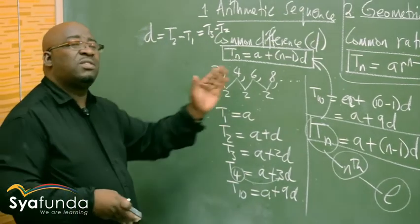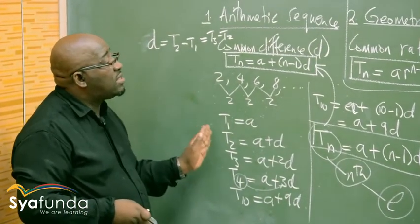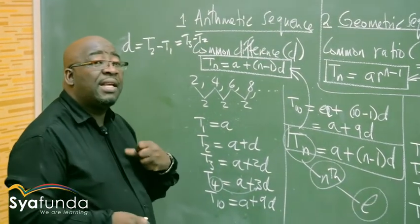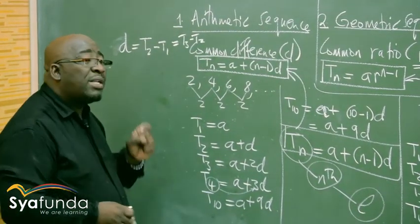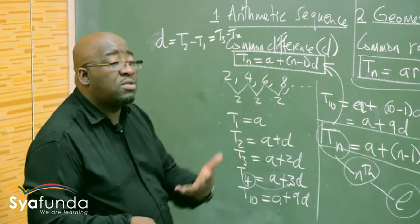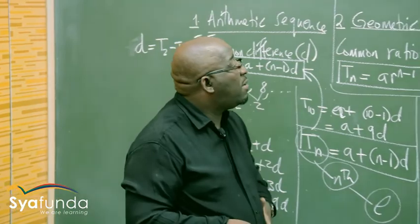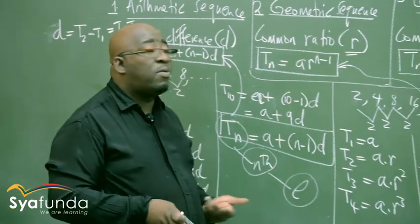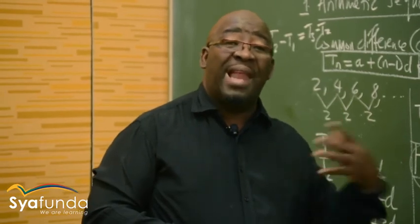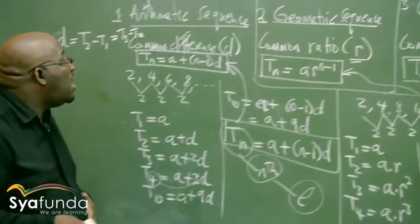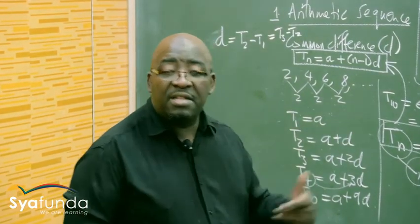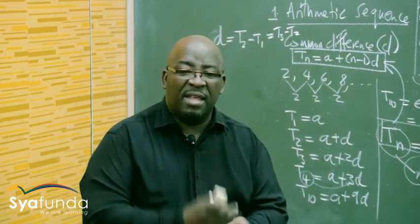For these first two sequences — arithmetic and geometric — you are also examinable on finding their sum. The quadratic sequence will only be examined on the nth term, general term, or last term. I want us now to look at the sum of both the arithmetic sequence and the geometric sequence.